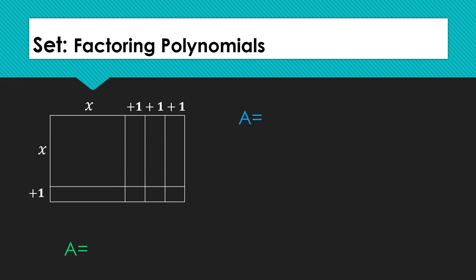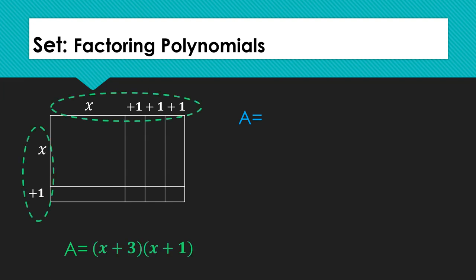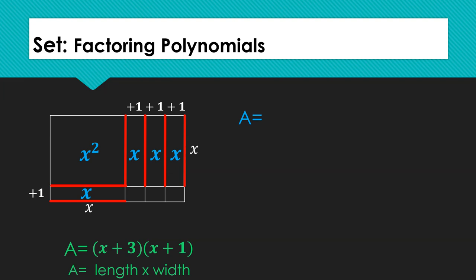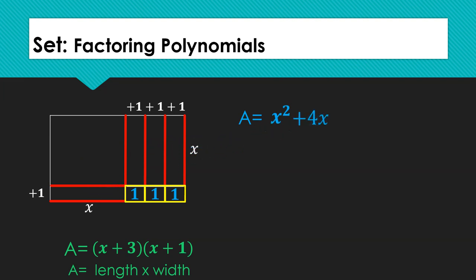The dimensions of the large square are x by x, which gives us an area of x squared. The dimensions of the rectangles are x by 1, which gives us an area of x for each rectangle. The dimensions of the small squares are 1 by 1, which gives us an area of 1 for each small square. Once we combine our like terms, we find that the area of the entire rectangle is x squared plus 4x plus 3.